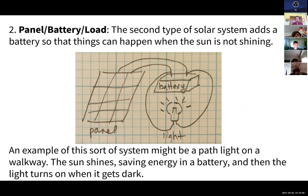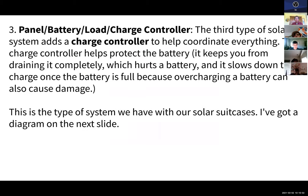That's a panel, a battery, and a load. The third type is the kind of system we're going to make with our solar suitcase. It adds a charge controller. I've mentioned this before—a charge controller is like the referee or the manager of the whole system. It keeps the battery from getting run down too far because that's bad for batteries, and it also keeps the battery from getting overcharged. Batteries are kind of sensitive.